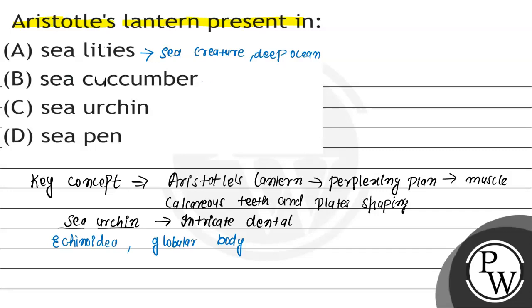Then we come to sea cucumber. Sea cucumbers are also Echinodermata — phylum Echinodermata, class Holothuroidea. These are marine animals with leathery skin and an elongated body.